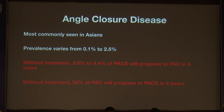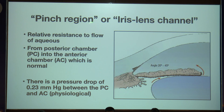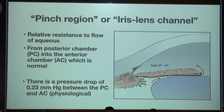This is called the pinch region. The lens has a pinch region — physiologically, the posterior chamber will always have a higher pressure compared to the anterior chamber, which is what gets the aqueous through the pupillary area into the anterior segment. There is a pressure drop of 0.23 mmHg between the posterior and anterior chamber. This is the pinch region or the iris-lens channel.